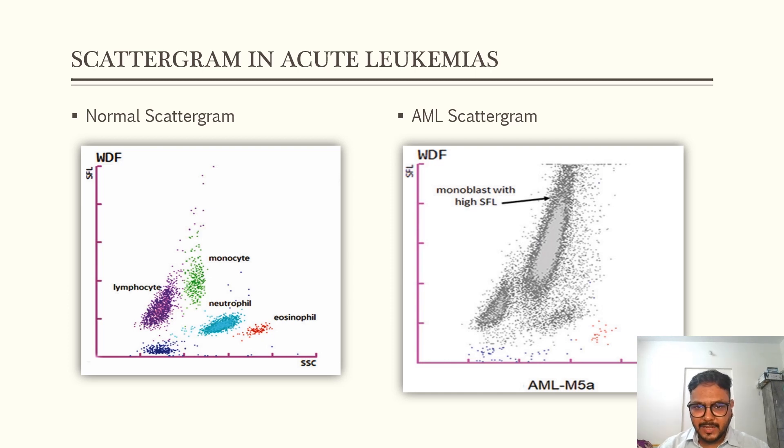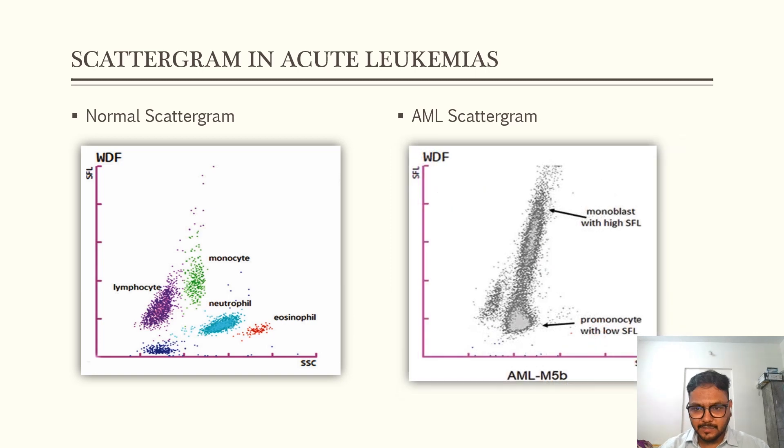Now coming to AML M5B, acute monocytic leukemia. Here we see two clusters. One is of promonocyte which is slightly at the lower level because of obviously less permeability, less fluorescence. And here monoblast as we have spoken before, more permeability, more fluorescence. And here is the cluster of lymphocyte.